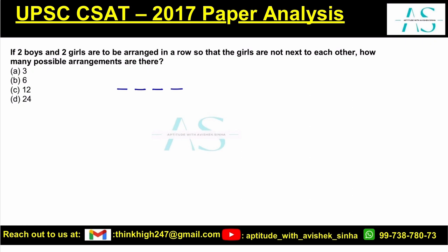Let me start by placing two boys here. The boys can be placed in two positions, and they can be arranged in 2 factorial ways — that is, 2 ways.